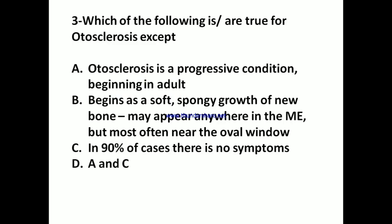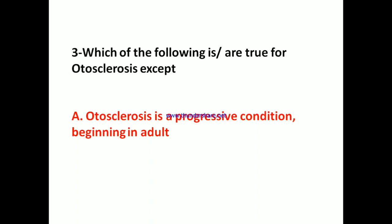Question 3: Which of the following is/are true for otosclerosis except? A) Otosclerosis is a progressive condition beginning in adulthood. B) Begins as a soft spongy growth of new bone. C) May appear anywhere but most often near the oval window. D) In 90% of cases there are no symptoms. Answer: A) Otosclerosis is a progressive condition beginning in adulthood.